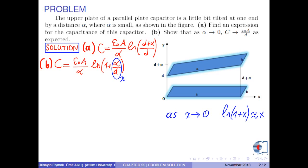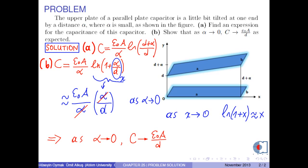Therefore, the capacitance becomes epsilon zero times a over alpha times alpha over d, where alphas cancel each other. Therefore, we can say that as alpha goes to 0, capacitance goes to epsilon zero times A over d as expected.